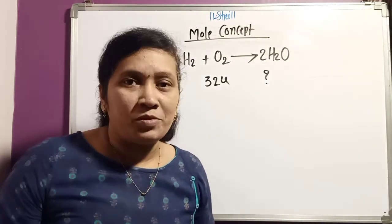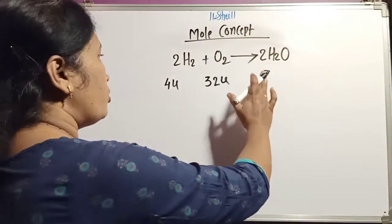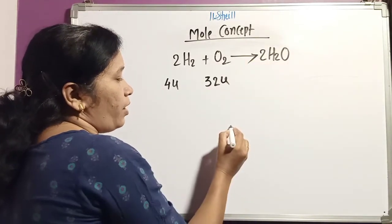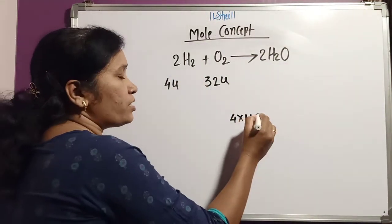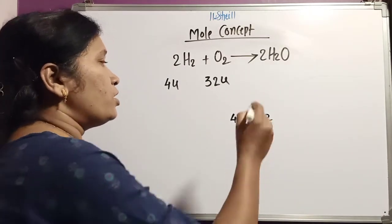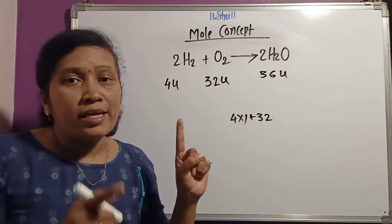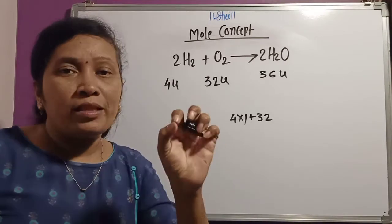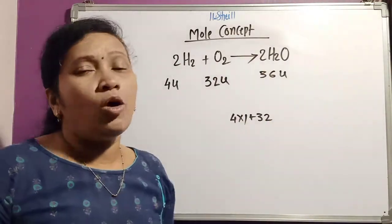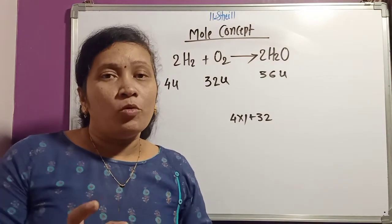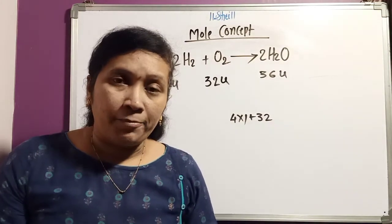So 4u of hydrogen and 32u of oxygen, when combined with each other, form water. For this, I am providing a link in the description box through which you can find out the atomic mass or formula unit mass of any substance. See here — water has 2H₂, so there are 4 hydrogen atoms: 4 × 1 = 4, plus 32 gives 36. So 4u of H and 32u of oxygen gives 36u of water.